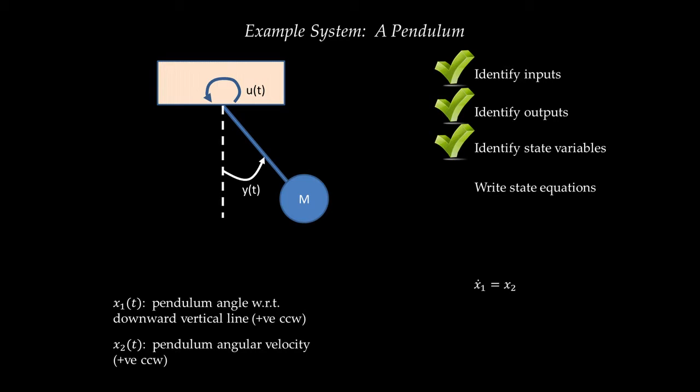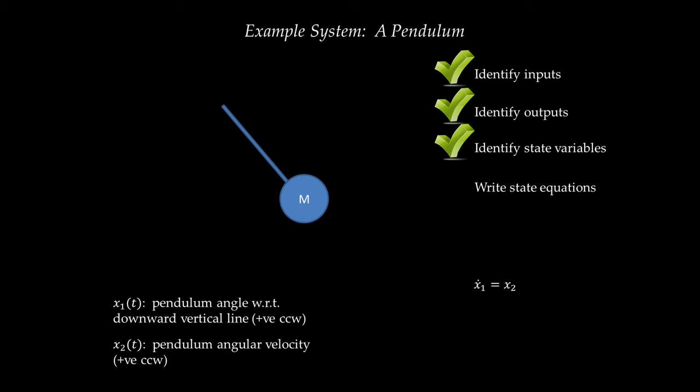This law of motion applies in two cases. The summation of moments around the center of gravity equals the moment of inertia around the center of gravity times angular acceleration. Alternatively, the summation of moments around a fixed hinge point equals the moment of inertia around that point times angular acceleration. In this case, we have a pendulum hinged at a fixed point, so we can apply this law. To do that, we draw a free body diagram, removing everything but the pendulum and showing all forces and moments.